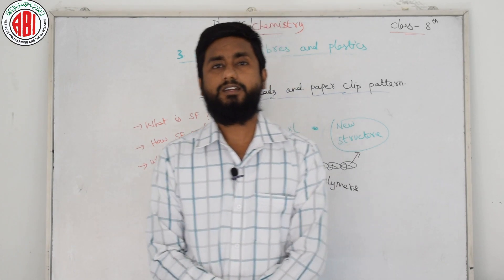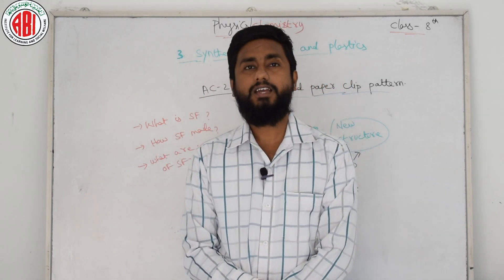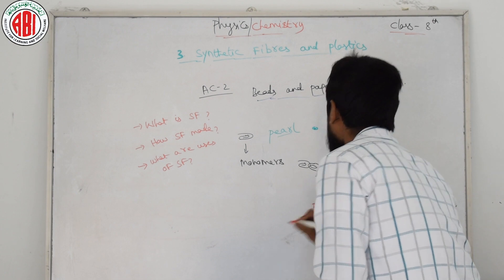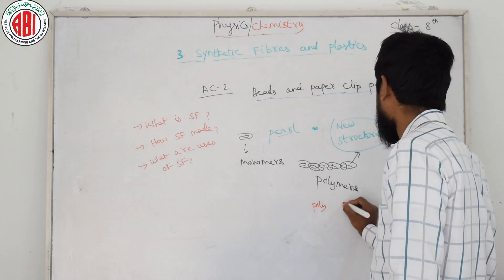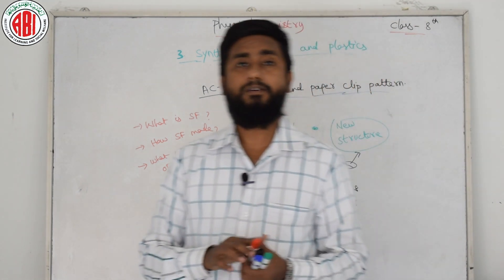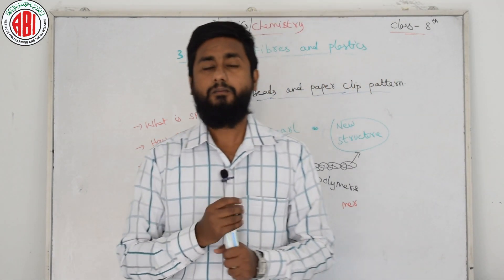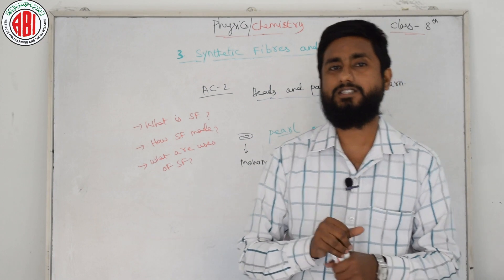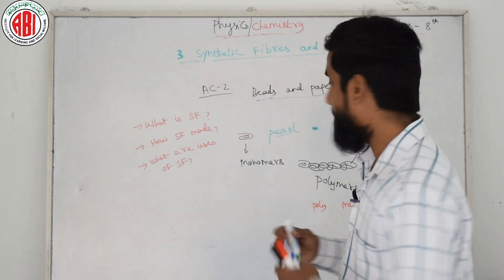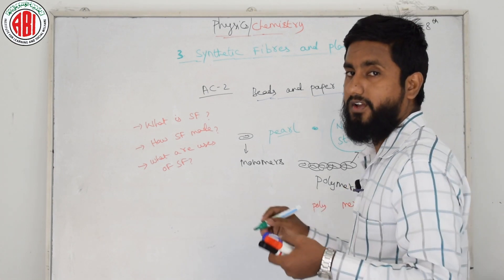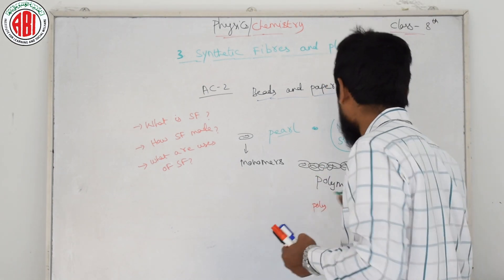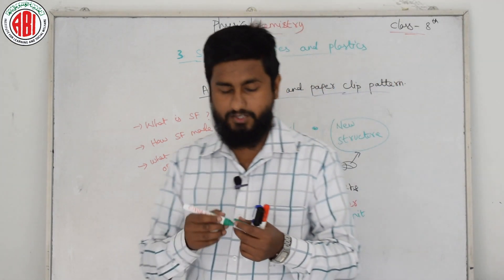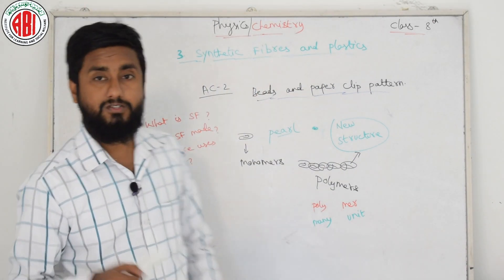Let me explain what polymers means. The word 'polymer' comes from two parts: 'poly' — P-O-L-Y — which means 'many', and 'mer' — M-E-R — which means 'part' or 'unit'. The word is derived from Greek. So polymers are structures made up of many small repeating units. Poly means many, mer means unit — many units joined together.